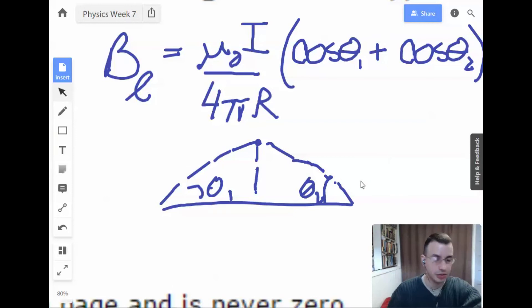This is the one I like to use. And when you have an infinite wire, what you get is zero for both the thetas because it's at infinity. And you get one plus one times two. And you get, for an infinite wire, you get mu not I over two pi R.